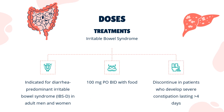Dose. For irritable bowel syndrome, eluxatiline is indicated for diarrhea-predominant irritable bowel syndrome, IBS-D, in adult men and women. The dose is 100 mg taken orally twice daily (PO BID) with food. Discontinue in patients who develop severe constipation lasting greater than 4 days.